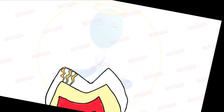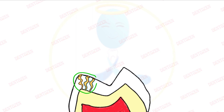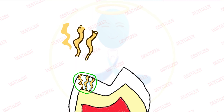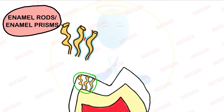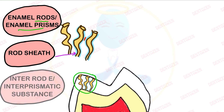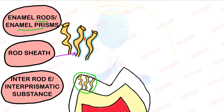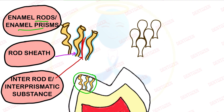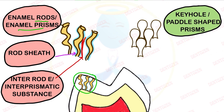In most parts of human enamel, it appears as enamel rods, which are also known as enamel prisms. Surrounding these enamel rods is organic material known as the rod sheath, and in between these enamel rods there is another substance known as inter-rod enamel or inter-prismatic substance. A more common pattern seen in enamel is called the keyhole-shaped pattern, or keyhole-shaped enamel rods, also called paddle-shaped prisms.